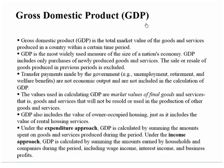A very common term we keep hearing in day-to-day life is gross domestic product — the GDP of a country. It is among the most important economic variables and a good measure of the wealth and total income of a country. GDP stands for gross domestic product — the total market value of goods and services produced in a country within a certain period of time. It is the most widely used measure of the size of a nation's economy and includes purchases of only newly produced goods and services.